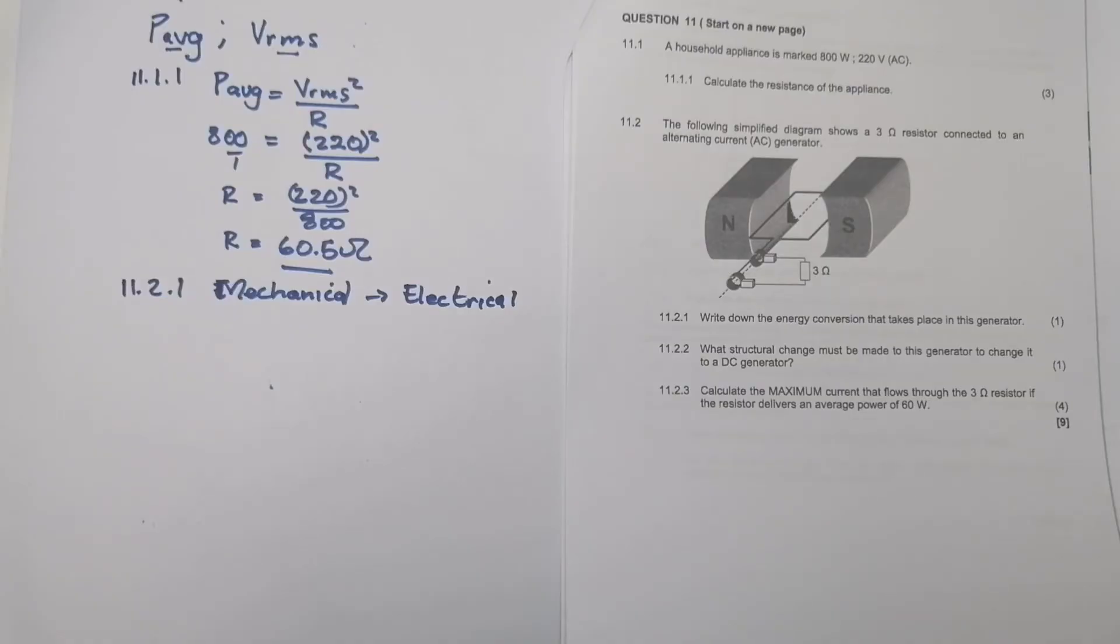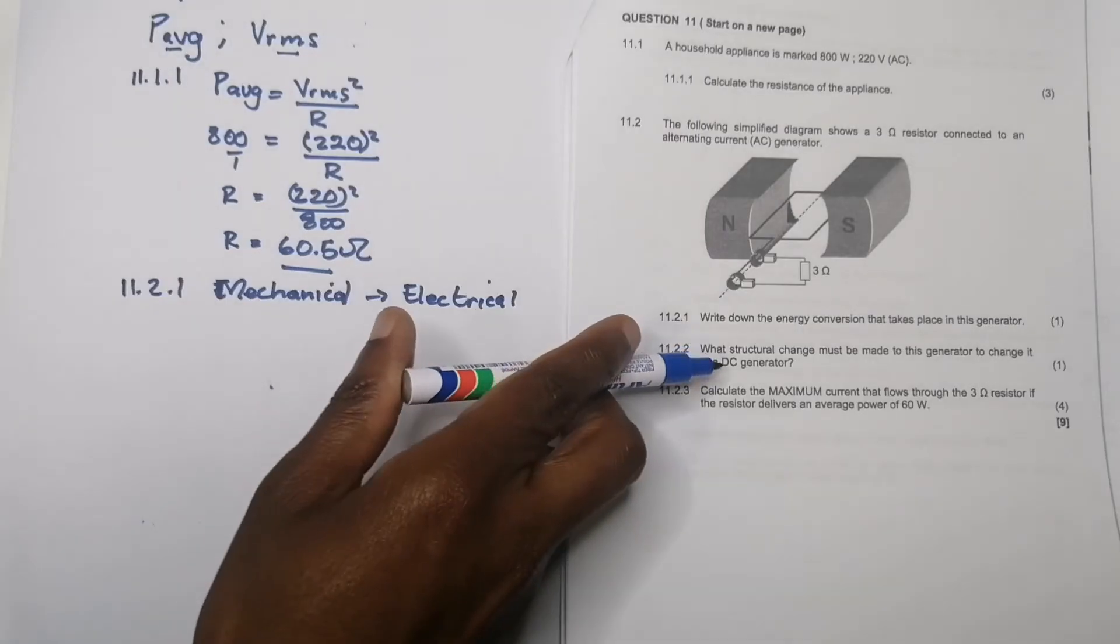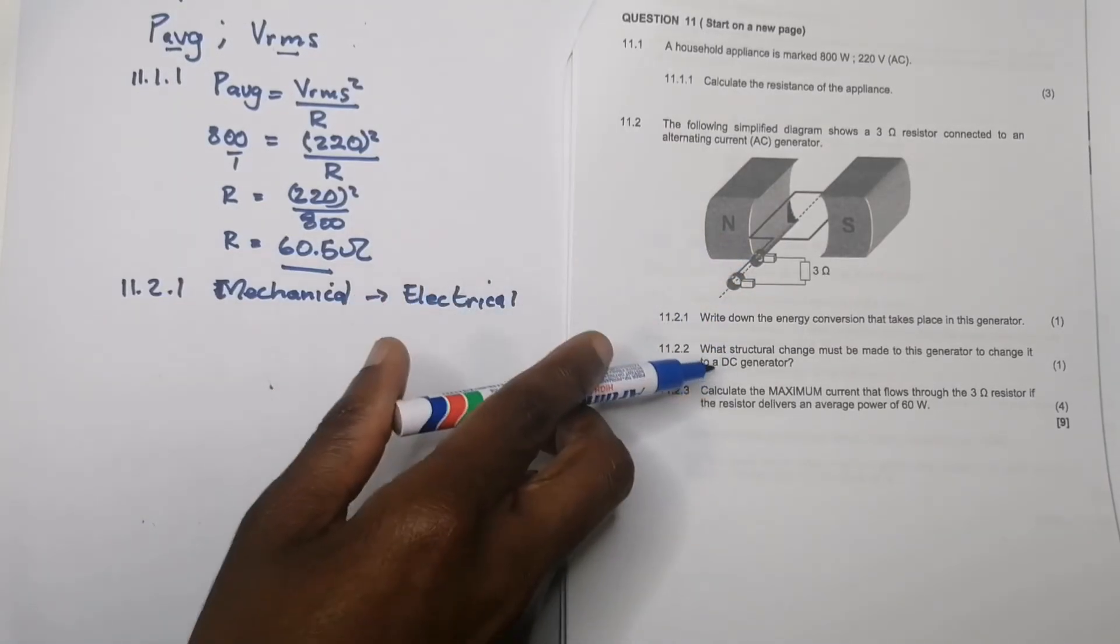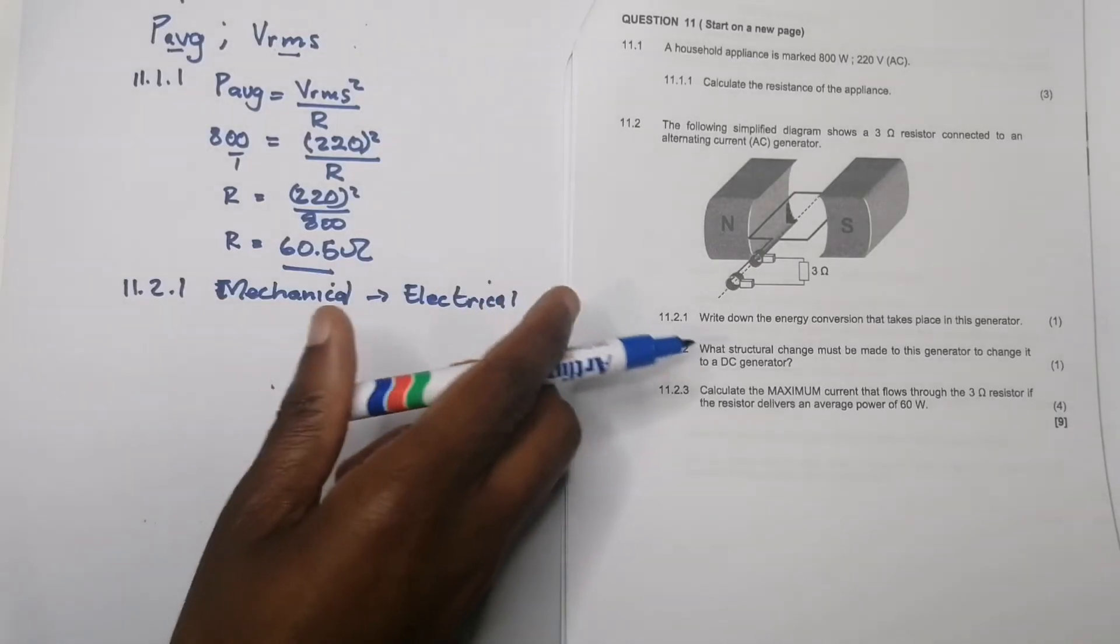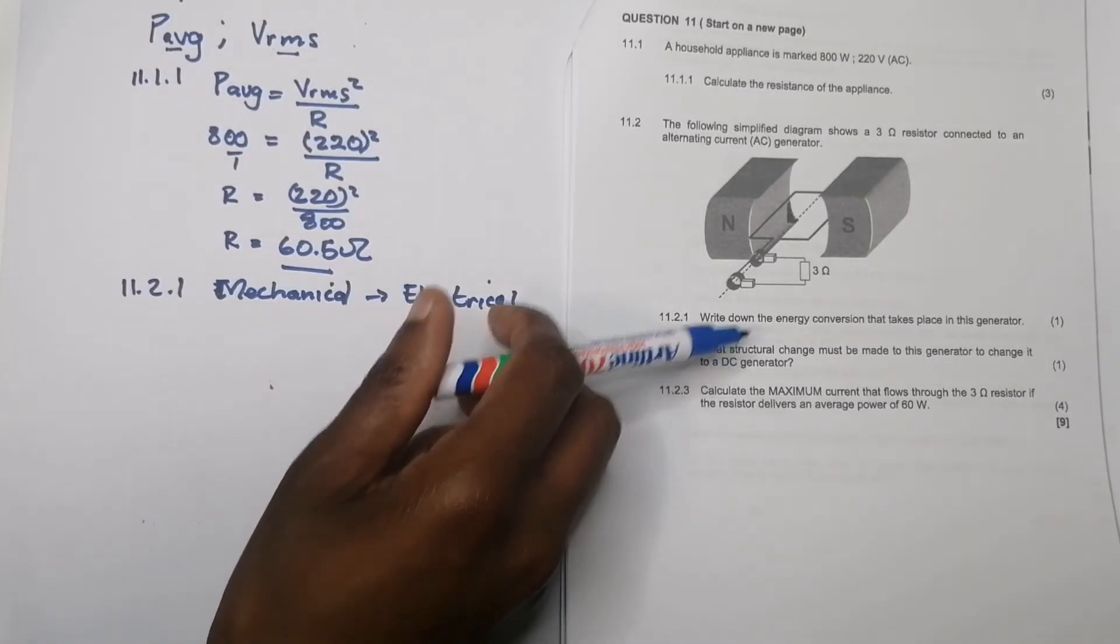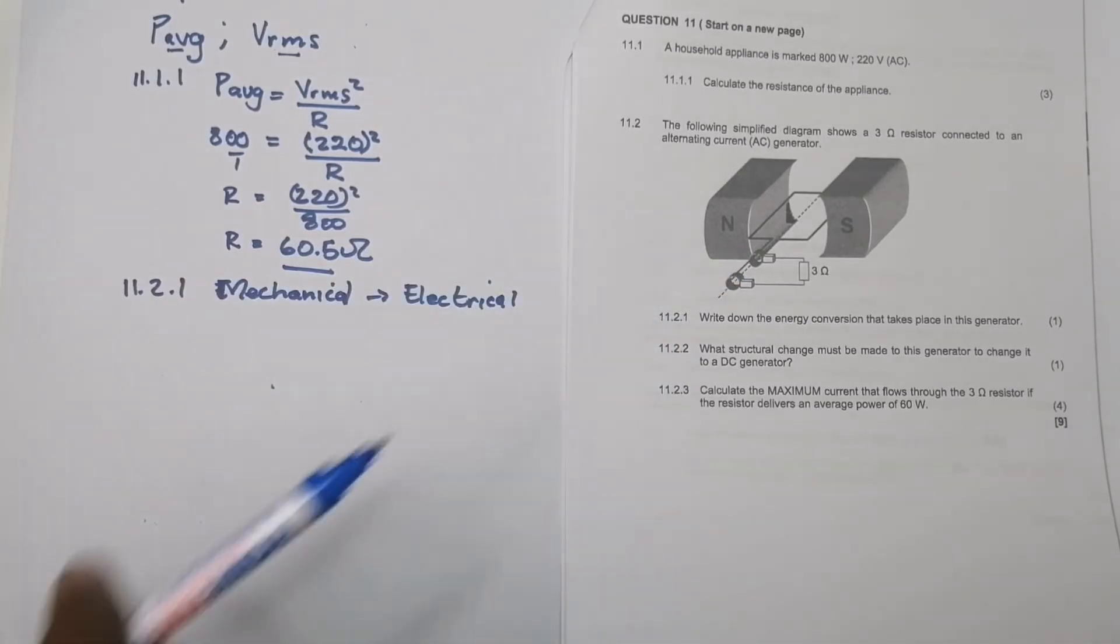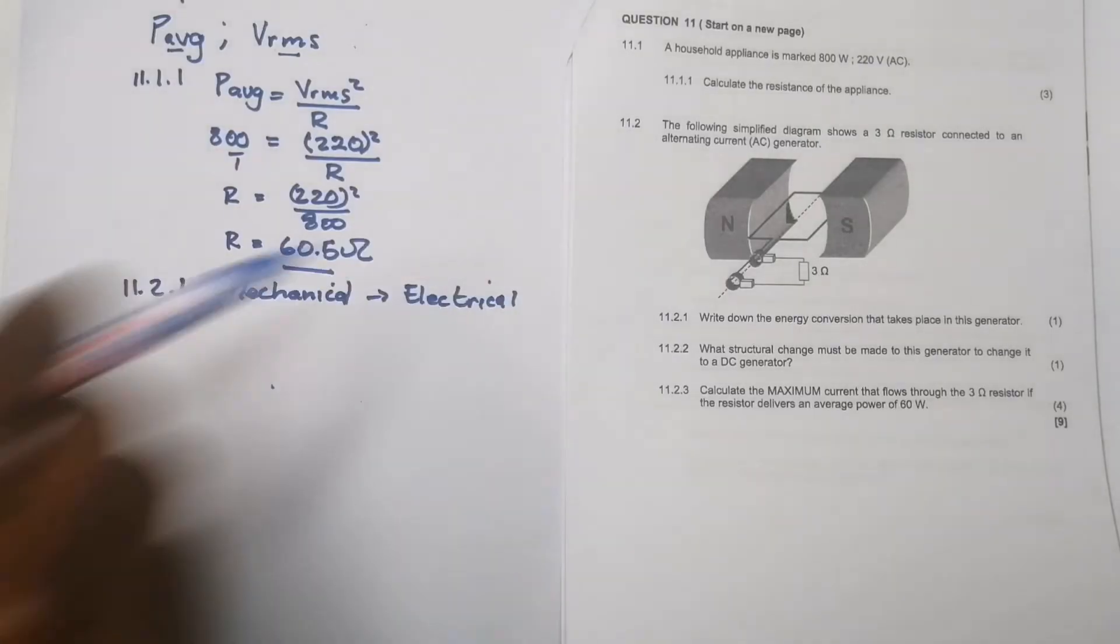They say, what structural change must take place to this generator to change it to a DC generator? In this case, we know it's AC because of those slip rings, so what must we do? We must replace or substitute the slip rings with split rings. So we must put split rings instead.